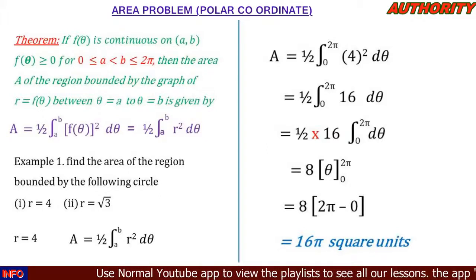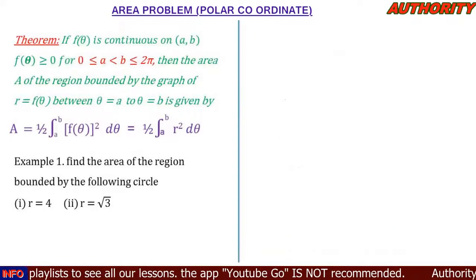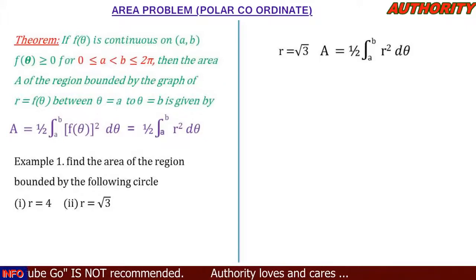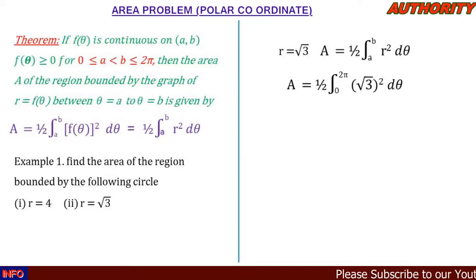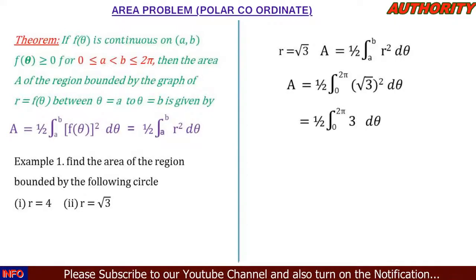So the area of the region bounded by the cycle r equal to 4 is 16pi square units. Now for the second one, r is equal to square root of 3. The formula says A is equal to one-half times the integral from a to b of r squared d-theta. Our interval is 0 to 2pi, so we have one-half times the integral from 0 to 2pi of (square root of 3) squared d-theta. The square cancels the square root, giving us 3.